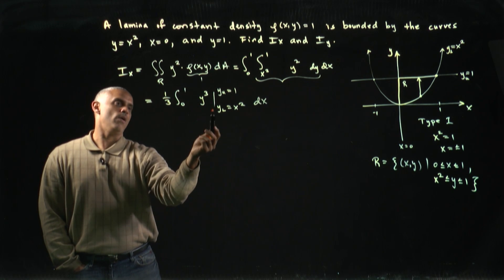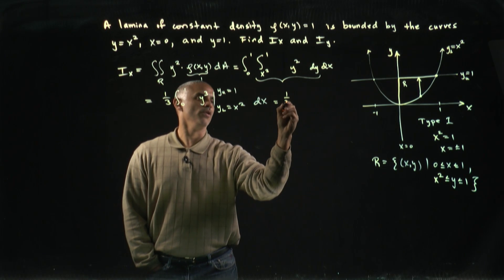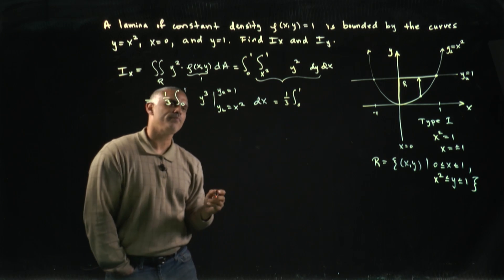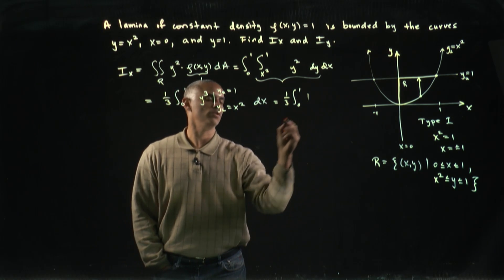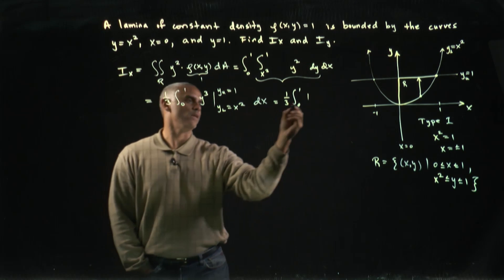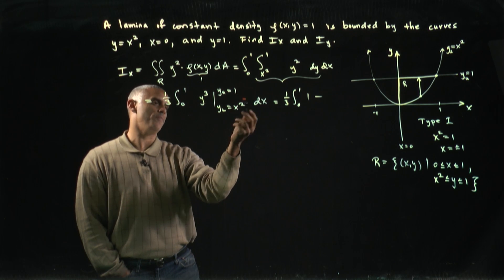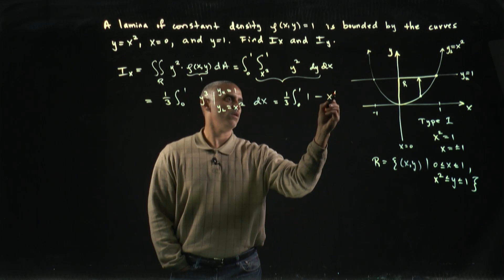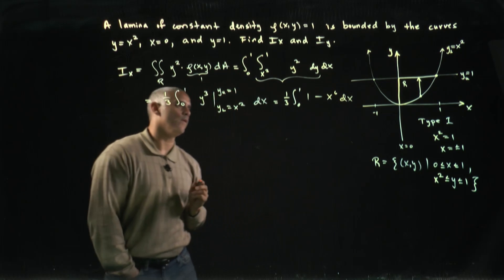So now, I'll have one third, the integral from 0 to 1, and at the upper bound I get 1 cubed, just 1, minus at the lower bound I get x squared cubed. When you raise the power to a power, we multiply the exponents. I get x to the sixth dx.